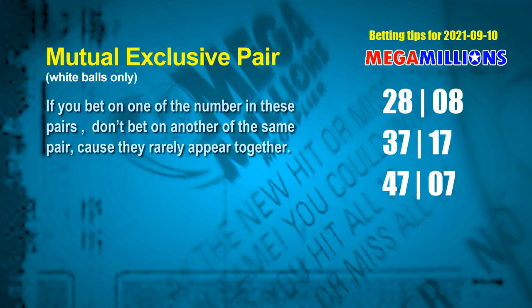Besides these best numbers, if you'd like to pick some numbers through the following units digit rule yourself, here are some tips to increase hit odds. First: mutual exclusive pairs. These numbers both match the following ones rule, but according to hundreds of results they rarely appear together — so if you bet on one, don't bet on the other in the same pair. The white ball mutual exclusive pairs for the next draw are: